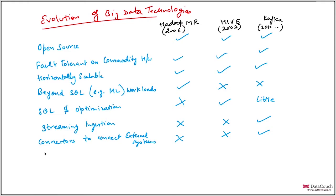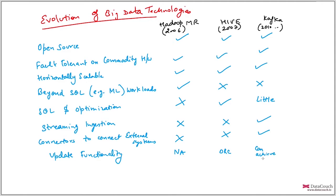Another important requirement is update functionality. Hadoop MapReduce does not provide update functionality — it is a processing technology, not even a storage technology, so this is not applicable. Hive supports updates on ORC files (Optimized Row Columnar format) on HDFS. Kafka updates are not directly allowed, but through a process called compaction you can achieve CRUD to some extent, though it's not straightforward. Transaction support is also an important dimension.